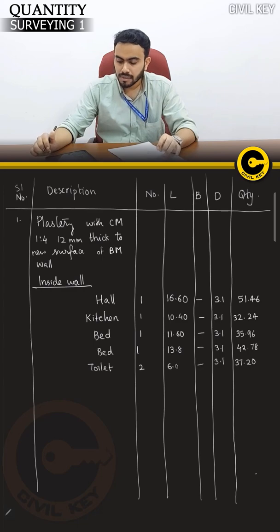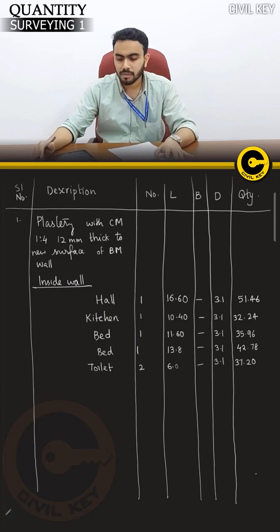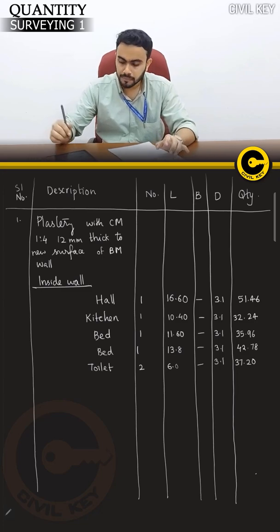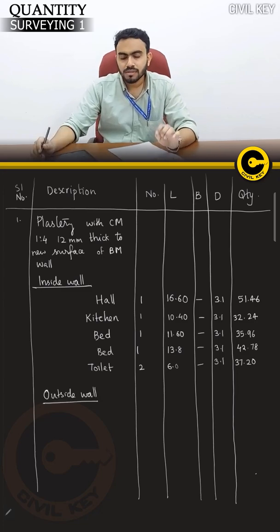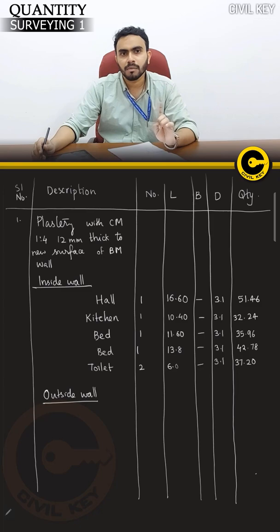Inside wall plastering — inside dimensions total length, total sum. Outside wall plastering — outside wall.